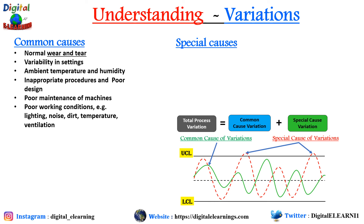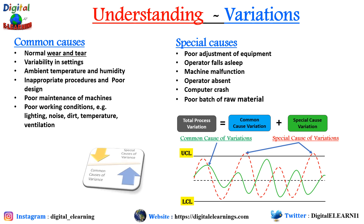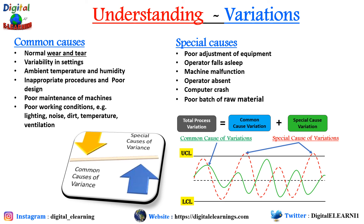For special cause of variation: poor adjustment of equipment — which means proper training is needed on how to adjust equipment — an operator falling asleep during operations, machine malfunctions, operator absence, computer crash, and a poor batch of raw material received. The key point is that these special causes can be controlled and removed from the process. Common cause cannot be eliminated, but it can be reduced. A process is statistically stable when there is no special cause of variation and only common cause of variation exists.